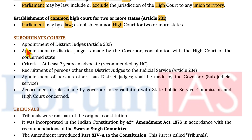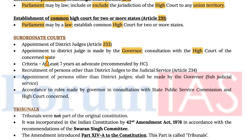Subordinate Court. Appointment of district judges is made under Article 233. Appointment to district judge is made by the governor in consultation with the high court of the concerned state. The criteria is that they must have at least seven years as an advocate to be recommended by the high court.